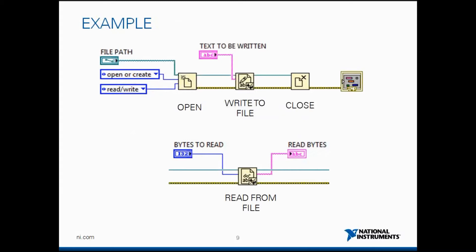Here is an example of how you can use these functions. The first function is an open file reference function which can open, create, or replace an existing file. You define your file path, specify whether you want to open, create, or replace a file, and give the access mode — whether you want read-only, write-only, or read-write permission. Once implemented, you get the file reference.